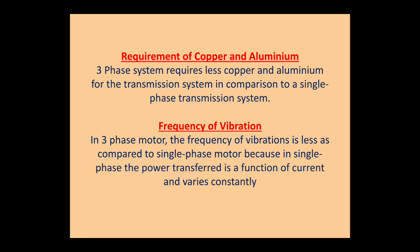Regarding the requirement of copper and aluminium, the three-phase system requires less copper and aluminium for transmission compared to a single-phase transmission line. In a single-phase system, more conductors are needed, which means more copper and aluminium are required.